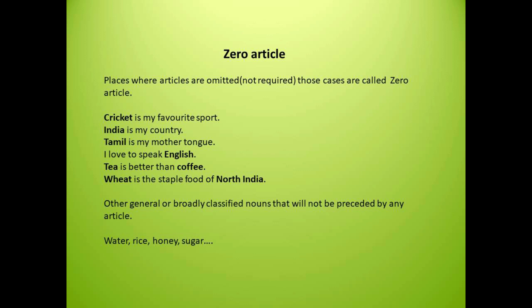Next example: Tamil is my mother tongue. Here, before Tamil, we do not put articles. In any sentence where names of languages come, we omit articles. Keep this in mind. If you include articles here, it becomes an unnecessary usage leading to errors.